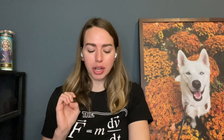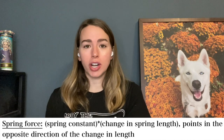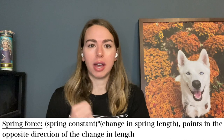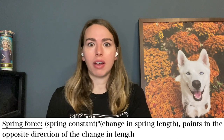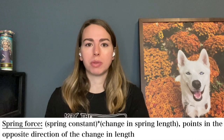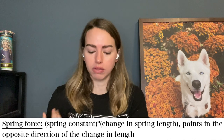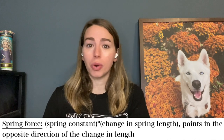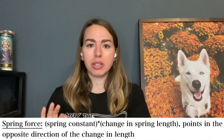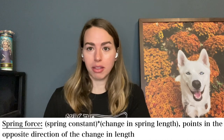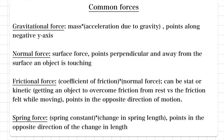Spring force is always the spring constant k times the change in length of the spring. The spring constant depends on the properties of the spring itself — there's no equation for k unless you're given spring force and change in length and asked to solve for it; otherwise it would have to be provided. The spring force always points in the opposite direction of the change in length. Pause and take a screenshot if you need to, then use these definitions as we go through the next steps.